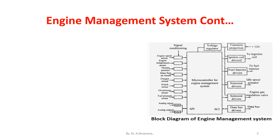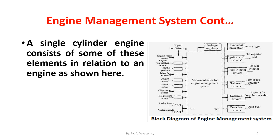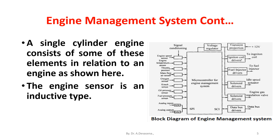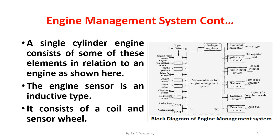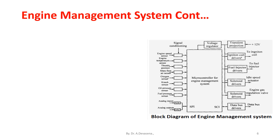A single cylinder engine consists of some of these elements in relation to an engine shown here. The engine speed sensor is an inductive type — it consists of a coil and sensor wheel. The inductance of the coil changes as the teeth of the sensor wheel pass it, resulting in an oscillating voltage.